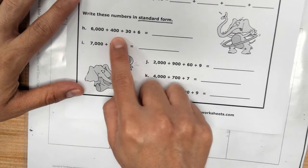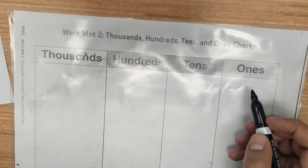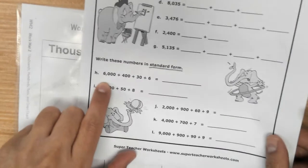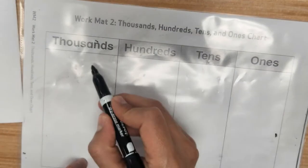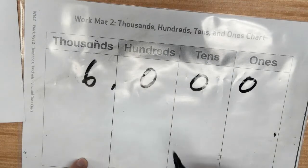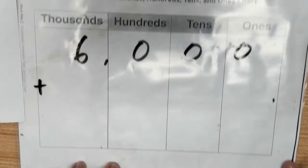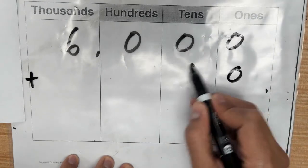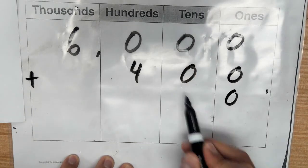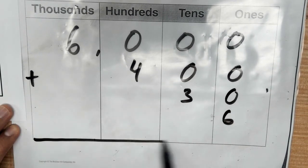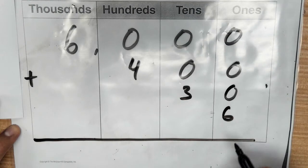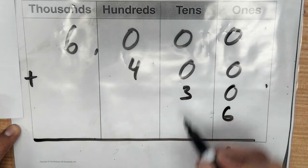Now I have this example: six thousand plus four hundred plus thirty plus six. I start with the thousands. Six thousand — three zeros, comma — six thousand. Plus four hundred, plus thirty, and plus six. Now I add all of these numbers: zero zero zero plus zero zero zero plus six is six, zero zero plus thirty is thirty, plus four hundred, plus nothing — six thousand four hundred thirty-six.